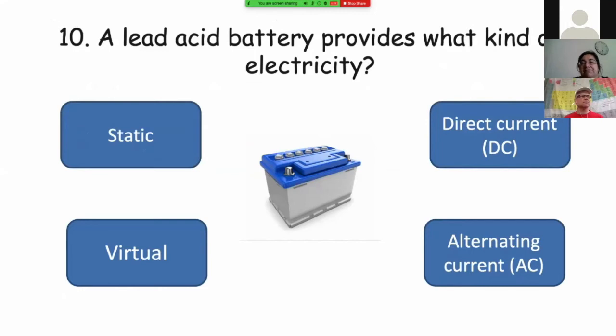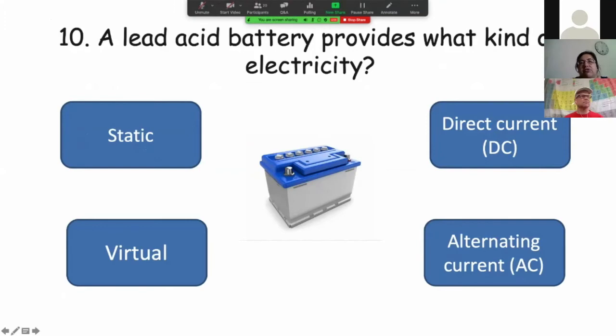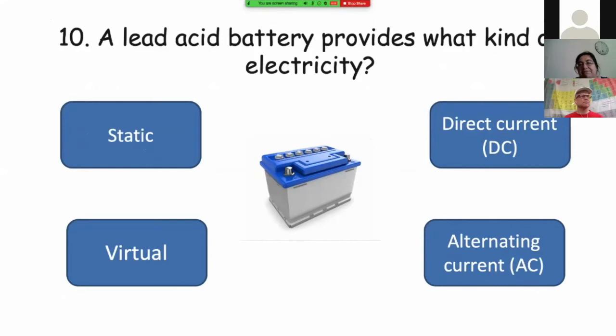Well, a lead acid battery, usually you see it in cars. Not the new cars, but a little old cars. And it provides what kind of electricity? What do we call this kind of electricity that is produced by a lead acid battery. Is it called static electricity? Is it called virtual electricity? Direct current electricity or alternating current electricity?